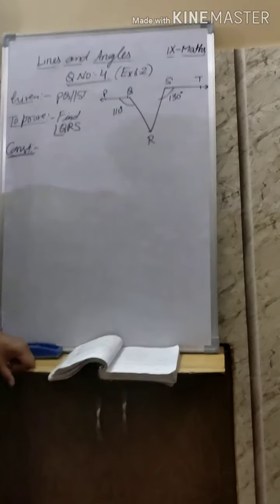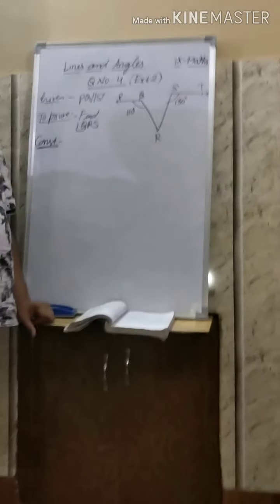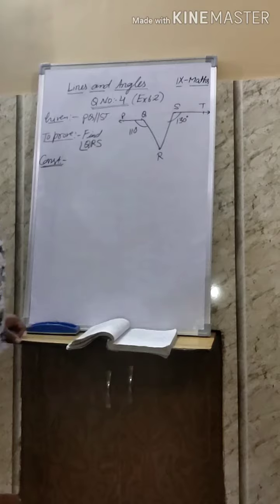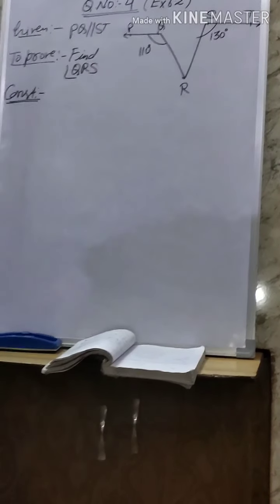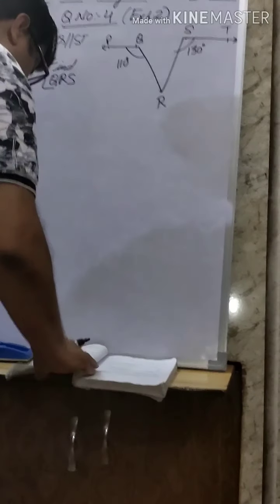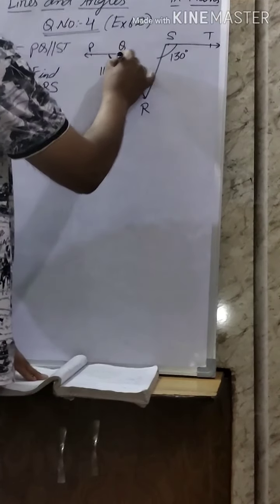Hello students, how are you? Last time we started Exercise 6.2. Now we are taking question number four. In the given figure, PQ is parallel to ST, and angle PQR is equal to 110 degrees.